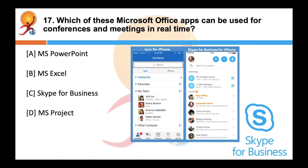Which of these Microsoft Office apps can be used for conferences and meetings in real time? The correct answer is C — Skype for Business is an integrated communication client for conferences and meetings in real time. It is the only Microsoft Office desktop app that does not have the Microsoft prefix in its name.